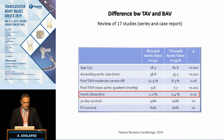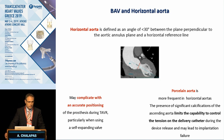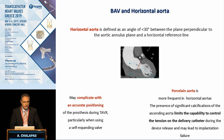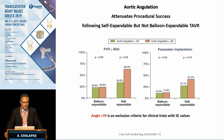Aortic dissection is more often seen with balloon-expandable valves, especially when these are oversized. Another important piece of information from CT analysis is the existence or not of a horizontal aorta, which is another common association. The horizontal aorta may complicate accurate valve positioning because it affects the ability to control the delivery system, and it is characterized by higher incidence of porcelain aorta. Aortic angulation can affect procedural success, especially when using self-expandable valves.